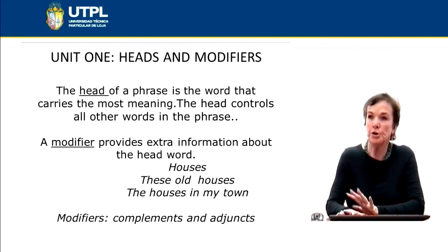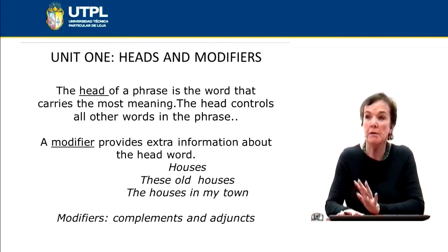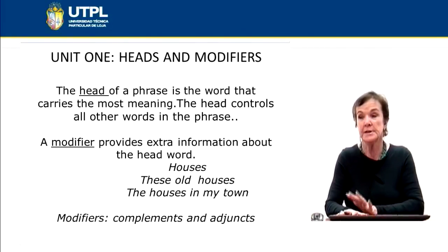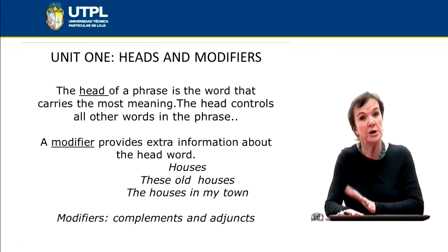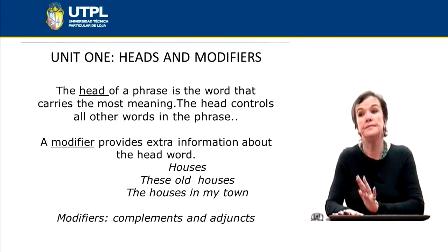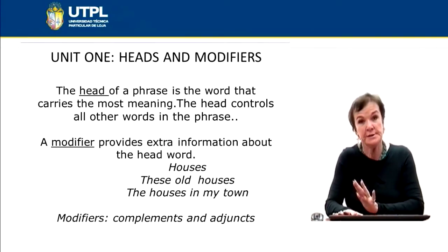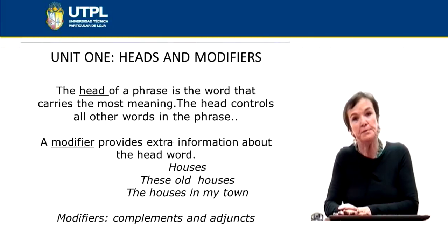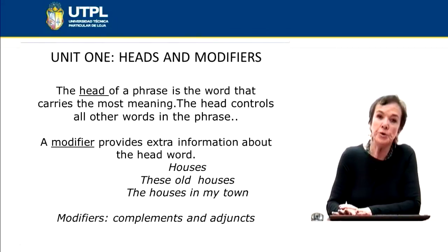Here we have some examples of noun phrases in which the word 'house' is the head and all other words are the modifiers. So we have 'houses' — the head alone — which can appear in sentences and clauses. 'These old houses': here we have a determiner 'this' as a modifier and an adjective 'old'. 'The houses in my town': here 'houses' is modified by a prepositional phrase 'in my town'. Modifiers can be of two classes: complements and adjuncts.